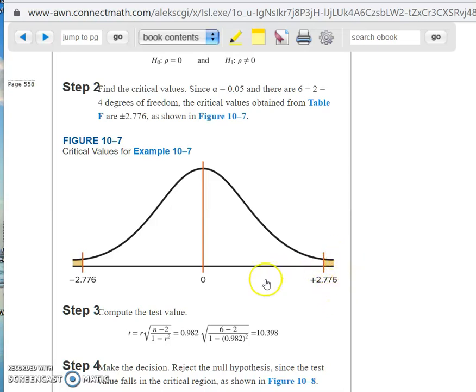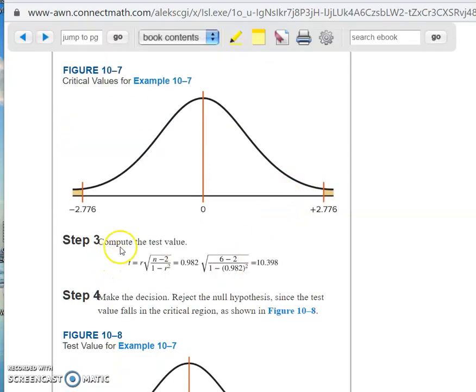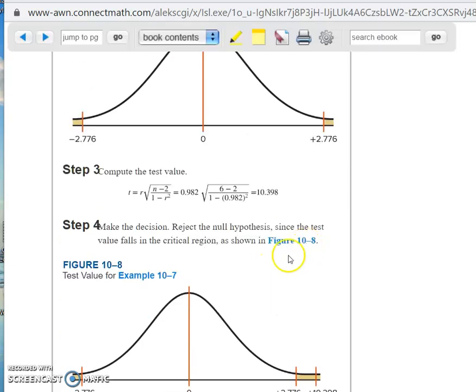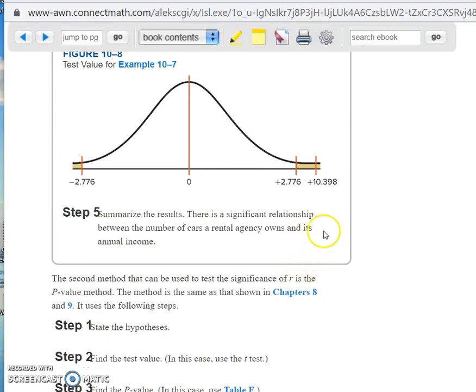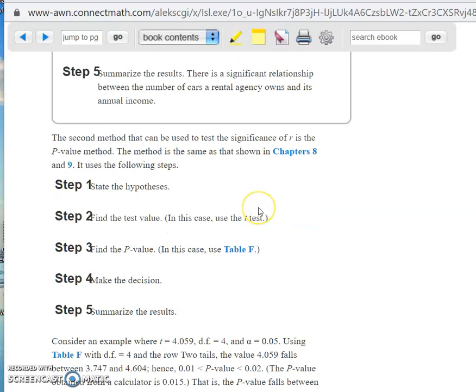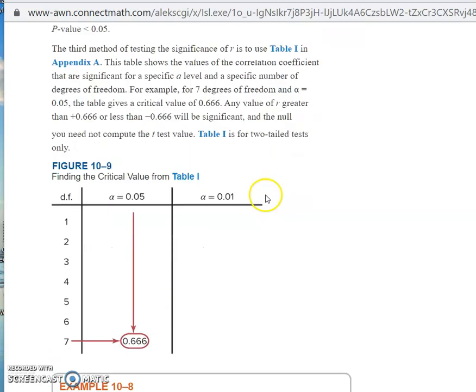So those are the critical values. If you're to the right or to the left of these critical values, you reject the null hypothesis. So now you get the test value. Take my advice, write down the formula every single time. Now you just plug in the numbers and you come up with 10.398. So now you make the decision. Well, we're definitely going to reject the null hypothesis because our test value is way over here. It's way past the critical value. So we reject the null hypothesis. There is a significant relationship between the number of cars a rental agency owns and the annual income. Now that seems like a silly example, but it just illustrates the point.